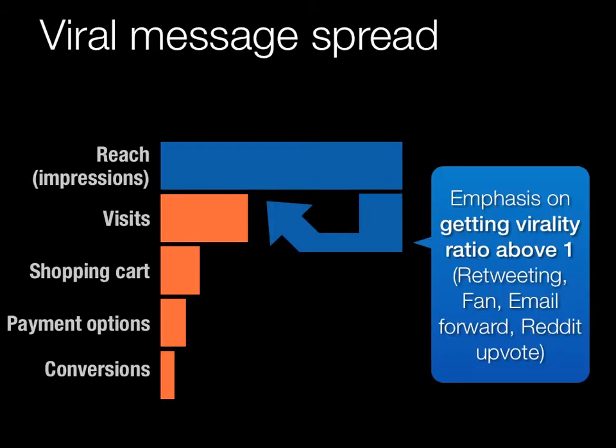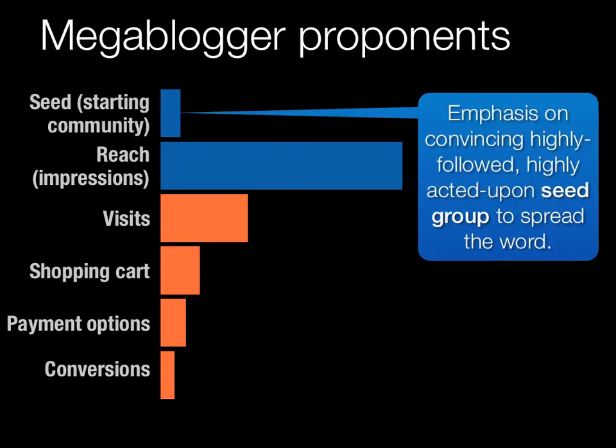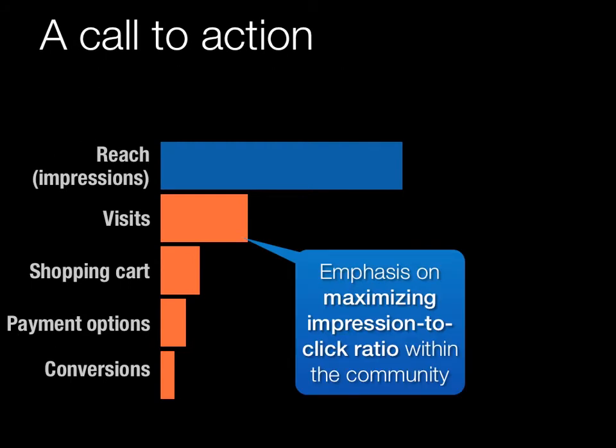If you were proposing a campaign that wanted to get a message out without a lot of money, you would focus on virality to make sure the message generated its own awareness. On the other hand, if you were trying to spread a message from a few initial influential people, you'd need to convince topic expert influencers to spread the word. And if you cared more about outcomes and conversions — for example, charitable donations — you might want to focus on the impression-to-click ratio, the chances that someone will click with a clear call to action.